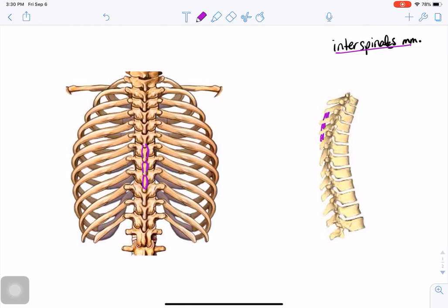Interspinales, like all other intrinsic muscles of the back, are innervated by the dorsal rami of spinal nerves.